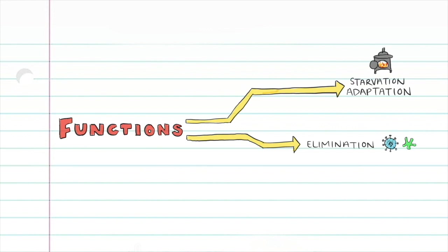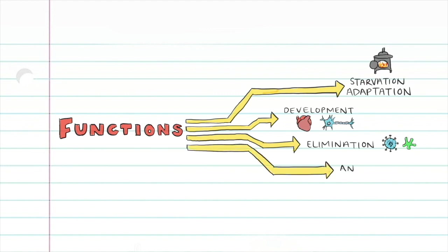Autophagy is also involved in development. It encourages the growth of nerve cells and improves cognitive function and neuroplasticity. It also supports the growth of heart cells and protects against heart disease. Autophagy is also involved in anti-aging and tumor suppression — it is one of the body's ways of getting rid of damaged cells to regenerate healthier new cells. Autophagy also kills cells in the form of programmed cell death, which prevents damage to tissues and organs.